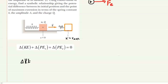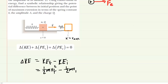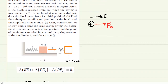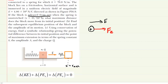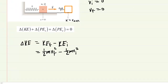The change in kinetic energy is the final kinetic energy minus the initial kinetic energy, which we can express as one-half m v_final squared minus one-half m v_initial squared. The block is released from rest, so its initial velocity is zero. And once it reaches the maximum position, the final velocity is also zero because the block comes to rest as it stretches the spring. So because both velocities are zero, the change in kinetic energy equals zero and can be eliminated from the equation.